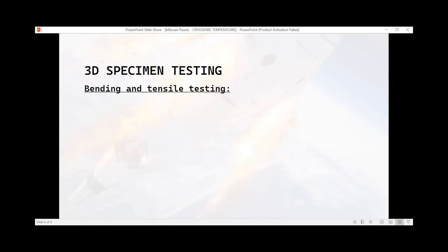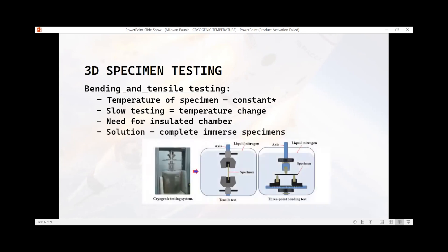For bending and tensile testing, temperature of specimen also should be constant, but that is slow testing compared to Charpy. The solution is that we need an insulated chamber, but the most easiest solution is the immersion of specimens in liquid nitrogen container while testing is conducted.